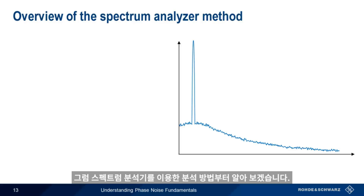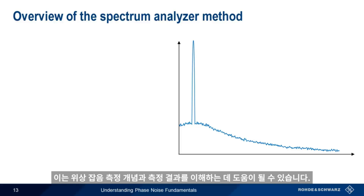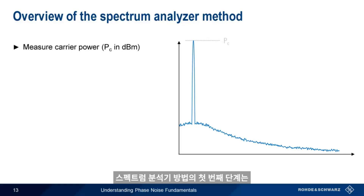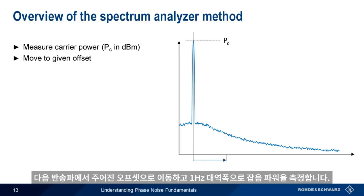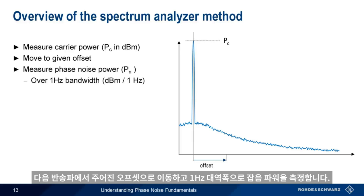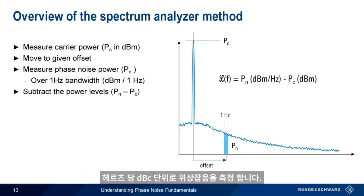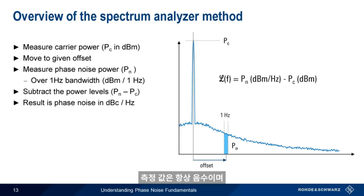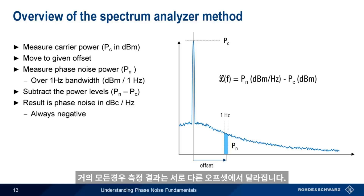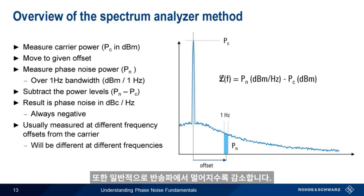We'll start by looking at the spectrum analyzer, or direct spectrum method, since this will also help us understand most of the basic phase noise measurement concepts and results. The first step in the spectrum analyzer method is measuring the power of the carrier — the nominal oscillator output signal — as an absolute power in dBm. We then move to a given frequency offset from the carrier and measure the noise power within a 1 Hz bandwidth. We then subtract the carrier power from the noise power, and the result is phase noise in units of dBc per hertz. Note that these values will always be negative. In almost all cases, this process is repeated at different frequency offsets from the carrier, and the results will usually be different at different offsets, generally decreasing the further away we get from the carrier.